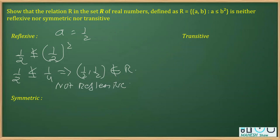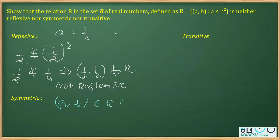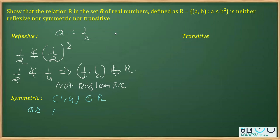Coming to the next part: to prove it is not symmetric, we give an example showing that (a, b) belongs to R but (b, a) does not. Take the pair (1, 4): it belongs to R since 1 ≤ 4² = 16. But if we flip the order to (4, 1), it does not belong to R, since 4 is not less than or equal to 1² = 1. Hence, it is not symmetric.